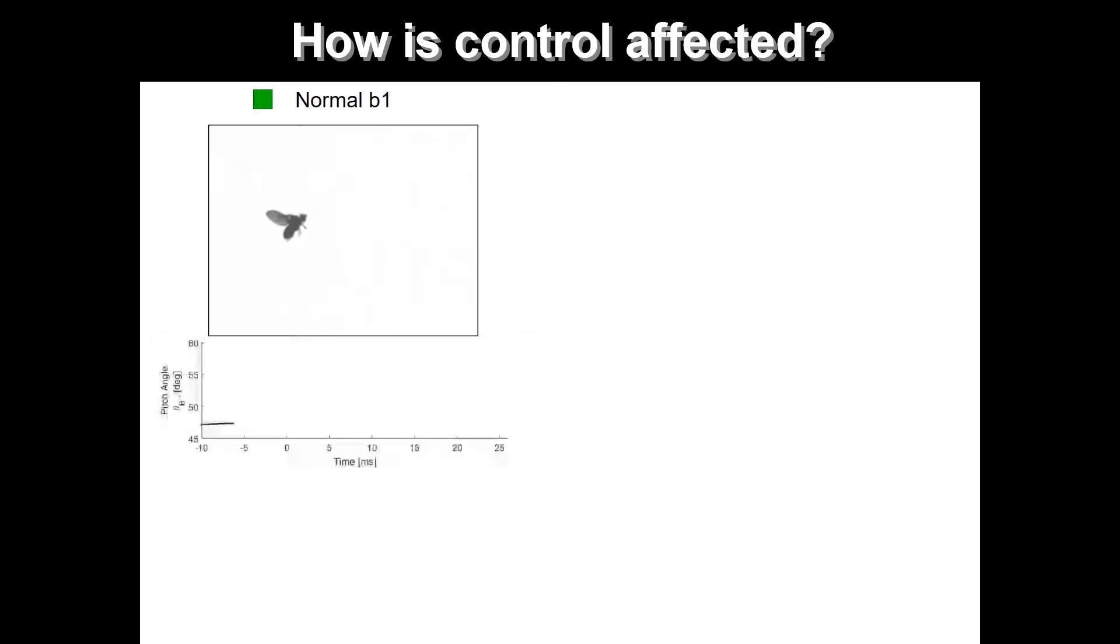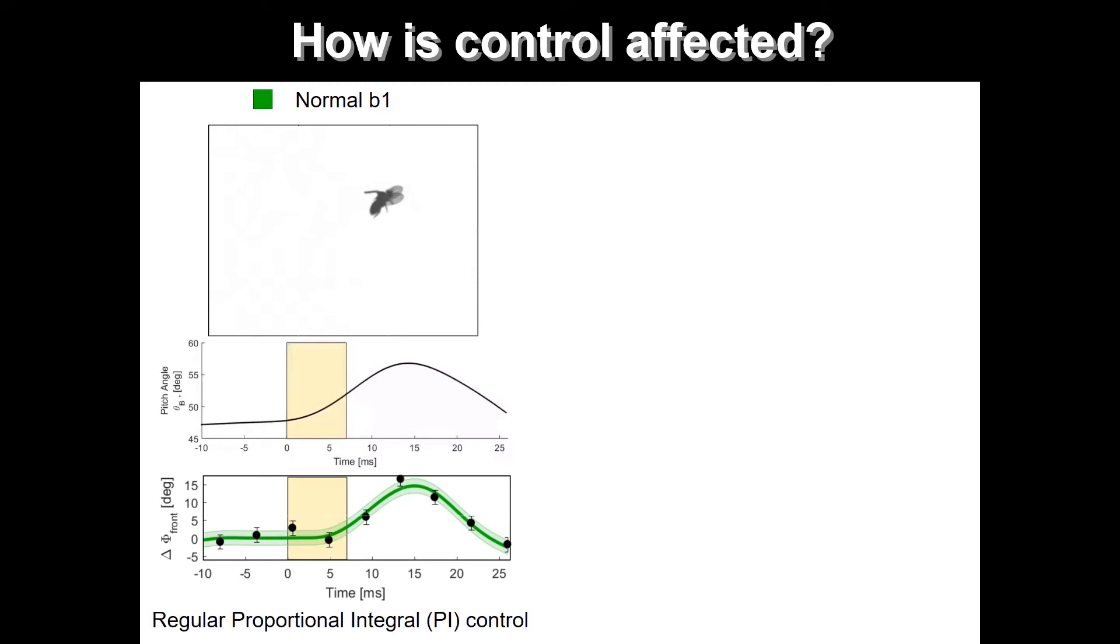So here we go. Here are the flies. This is the normal fly. It has a posture. We give it a perturbation. And it's able to correct its perturbation, its pitch orientation in time. If we take a look at the forward sweep of the wing, it's fit very well by our PI controller. Everything is as it was before.